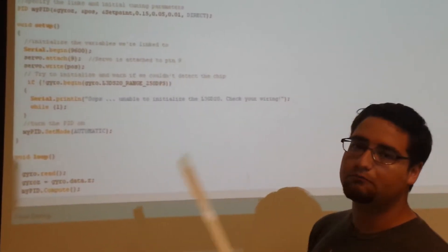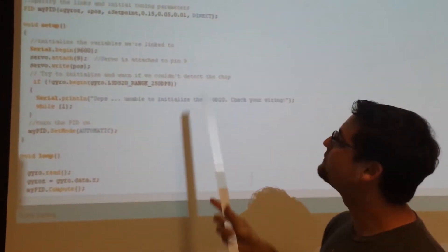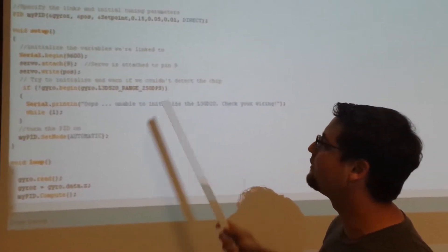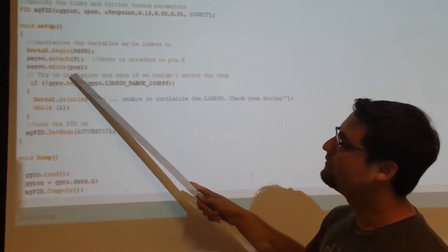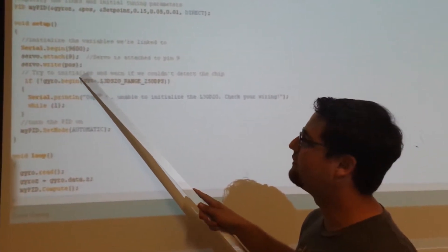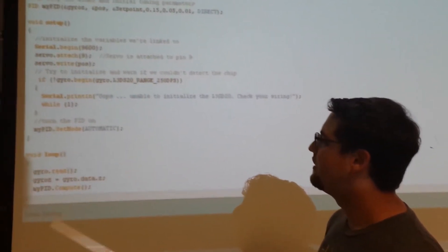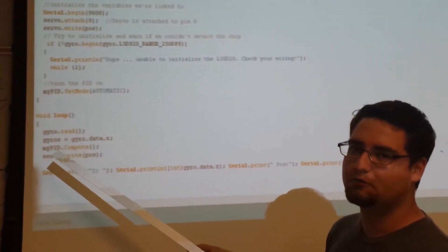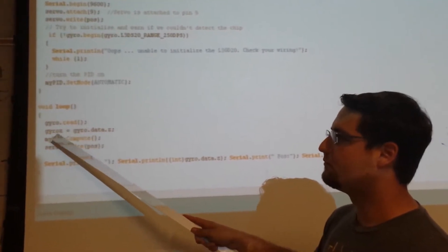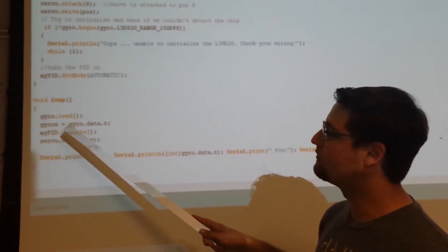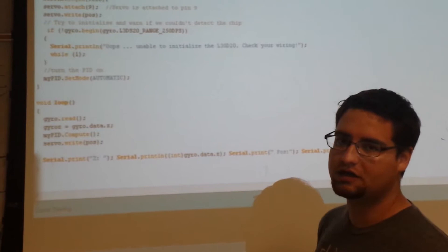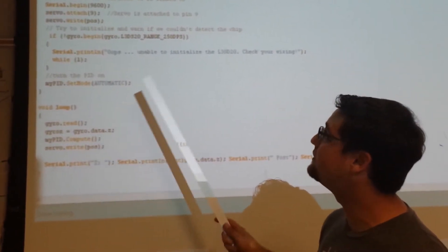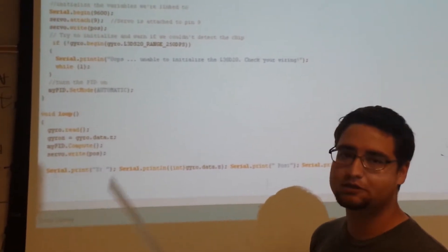And then we iterated, tried a bunch of different values. And this is giving us the best response that we found so far. The void setup is the same as before. We attach a servo with the same pin and write it to the initial position. And then the void loop here, we just, it's a lot simpler than it was before. We just read the gyro, take the gyro rate and cast it into that double variable that we created before. Compute the new response from the PID function and then write the position.